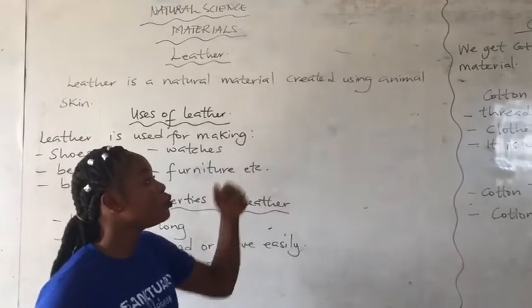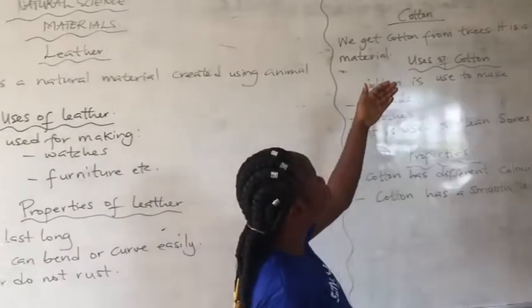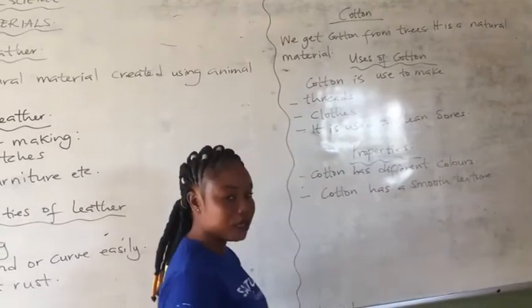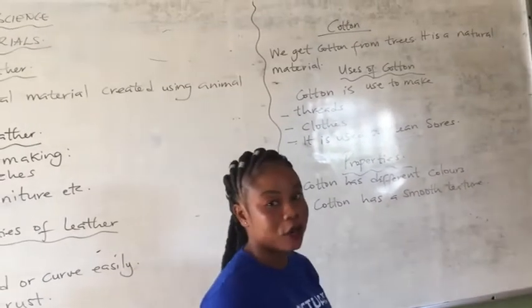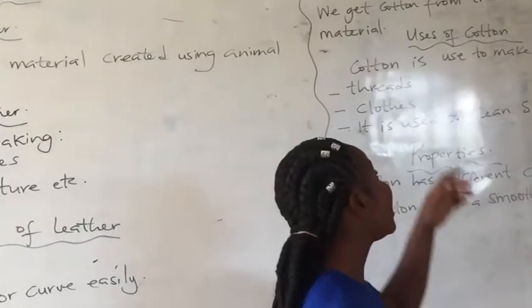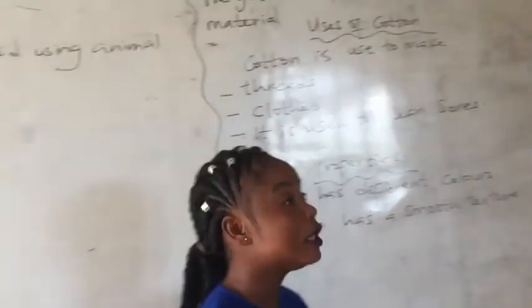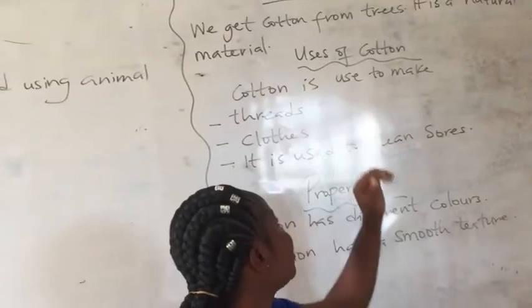Now let's move to cotton. We get cotton from trees. It is a natural material, not artificial. Uses of cotton.